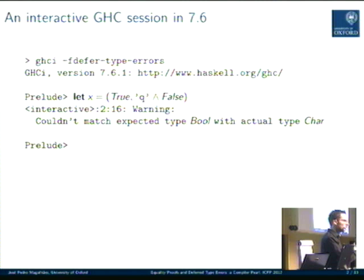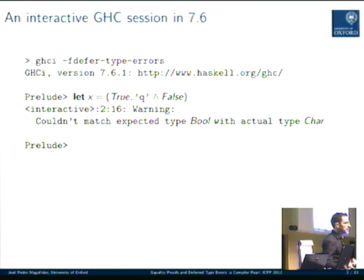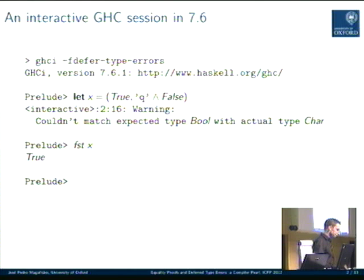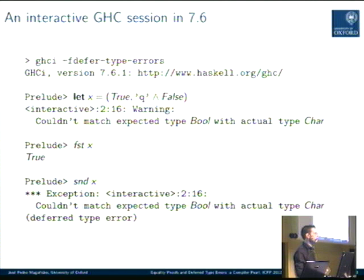You can define a value which is a pair. On the left you put a `True`, and on the right you put something that is obviously wrong — a conjunction between a character and a boolean. The compiler will tell you there's a type error here, but instead of making it into an error, it makes it into a warning. So you know you're doing something wrong, but you can go on. You can ask for the first component of this pair — that's fine, because there's nothing wrong with it. However, if you ask for the second component of the pair, then you get exactly the error that you previously got as a warning, with the exact same location, and the added information that this is something you've seen before. So you took the risk and then you run into the error.